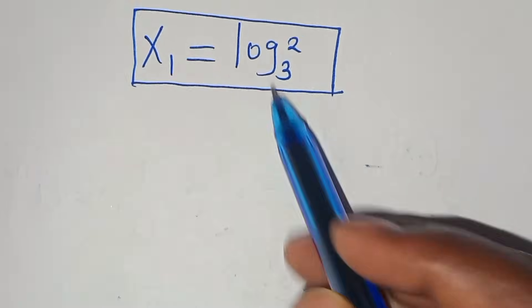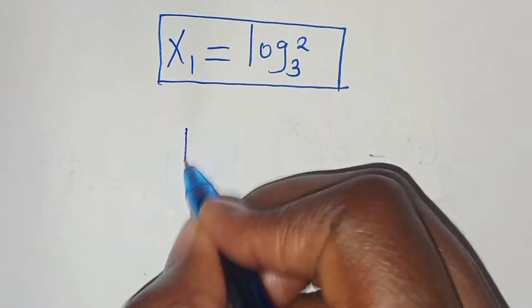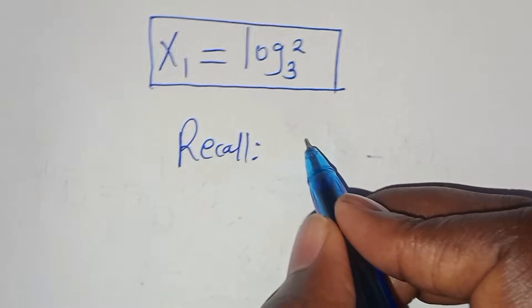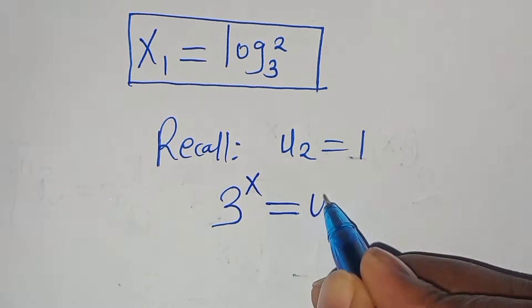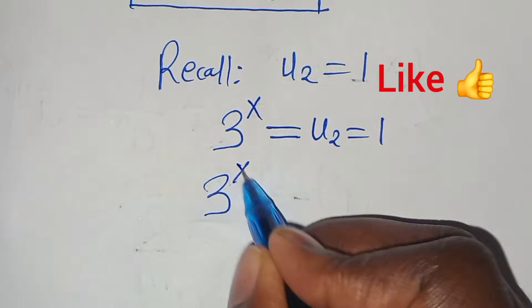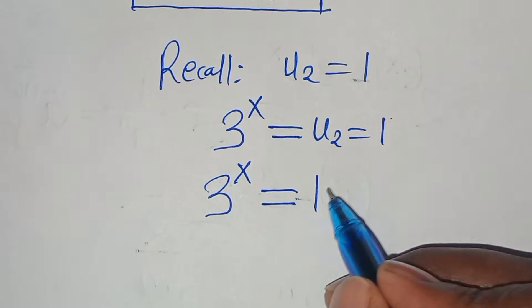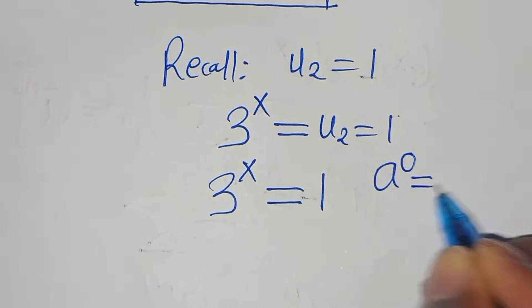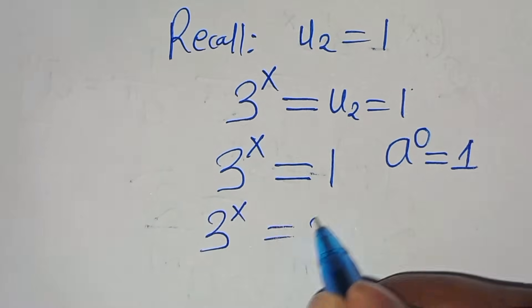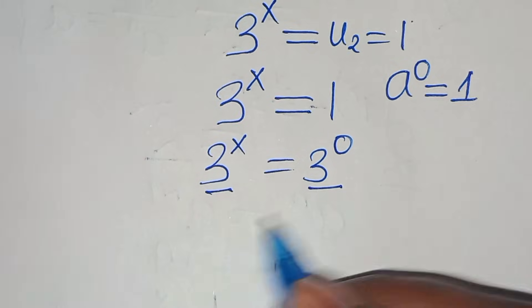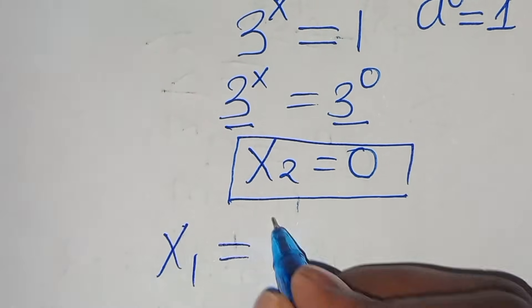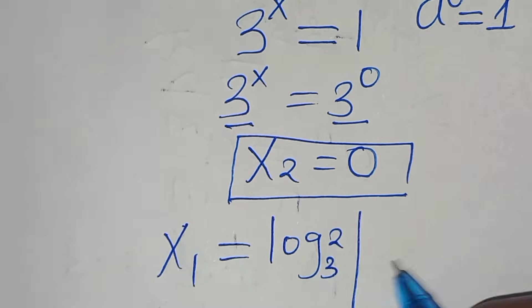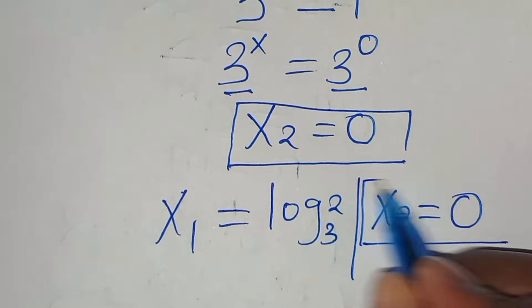So x₁ equals log base 3 of 2. For the second value, recalling u₂ equals 1: 3 to the power of x equals 1. Since 1 equals 3 to the power of 0, and the bases are common, x₂ equals 0. So we have two values: x₁ equals log base 3 of 2, and x₂ equals 0.